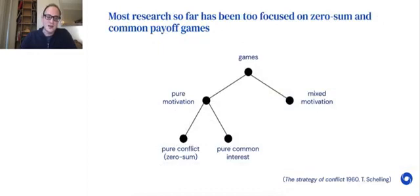Starting small, we observe that most research so far has been too focused on zero-sum games and common payoff games, which are sort of two ends of a spectrum. There's pure conflict and pure common interest. But most situations in the real world are not like that. They're much more mixed. They have some elements of competition and some elements of cooperation. We tried to respect that as we were putting together the initial set of substrates and scenarios for Melting Pot.